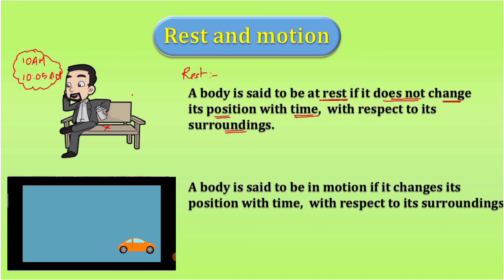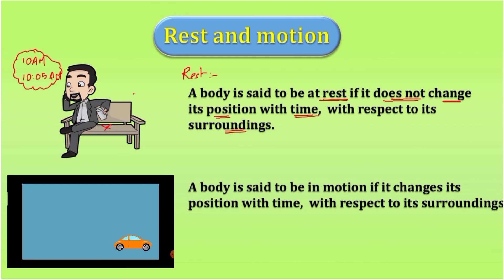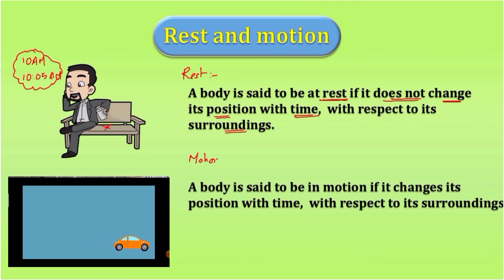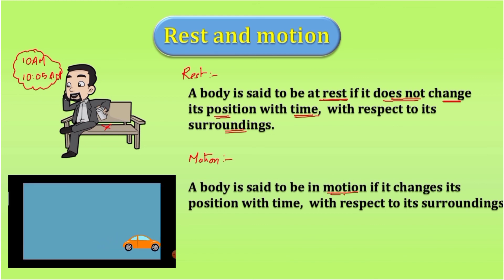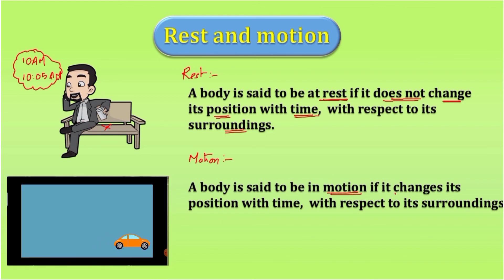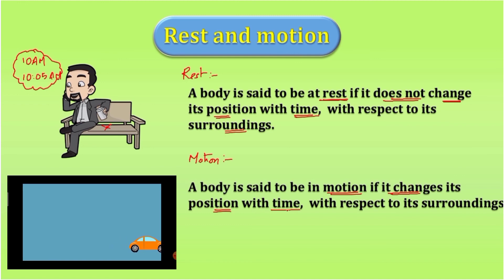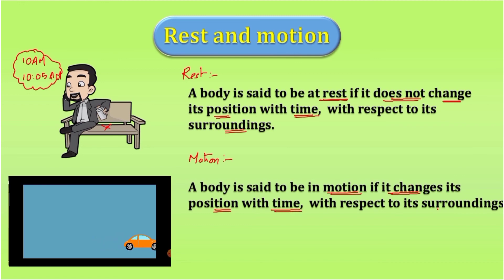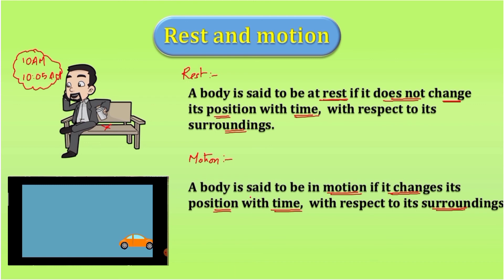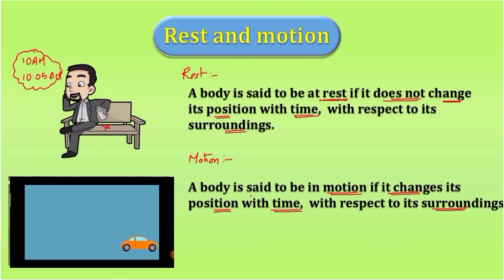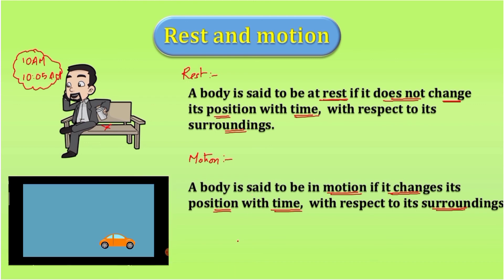A body is in motion if it changes its position continuously with time and also with its surroundings. Consider a car as shown in the video — you can see its position keeps changing, so we can say the car is in motion.